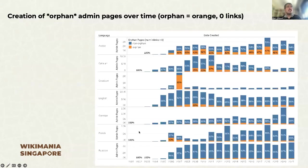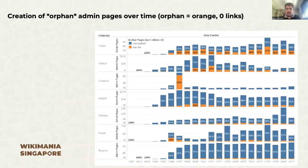In this other graph, we see the admin pages created over the years again, but in orange we see the percentage of admin pages which are orphaned — which do not receive a single link from any other page. These admin pages are likely less relevant, and they could be revised and perhaps deleted as they create clutter in the meta or wherever they are. Admin pages with no other pages pointing at them are less valuable, and we need to declutter them.